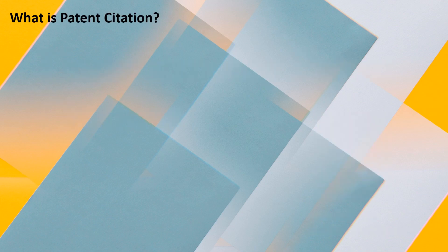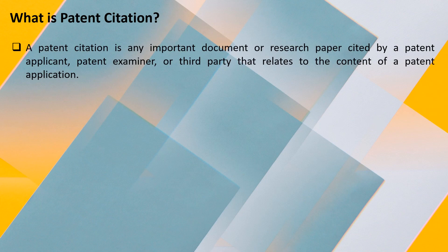So, what is a patent citation? A patent citation is any important document or research paper cited by a patent applicant, patent examiner, or third party that relates to the content of a patent application. Patent citations are documents — in most cases they are patent documents — which relate to the content or the specification of a patent application. If you see a patent application online in any patent database, you might find a list of patent documents mentioned below — those are the patent citations.